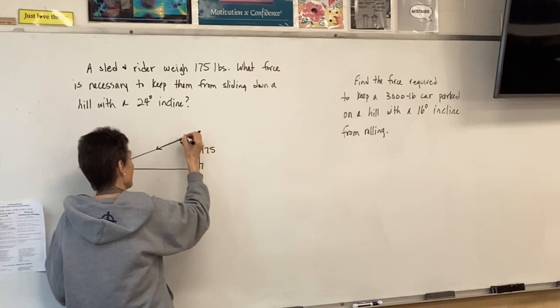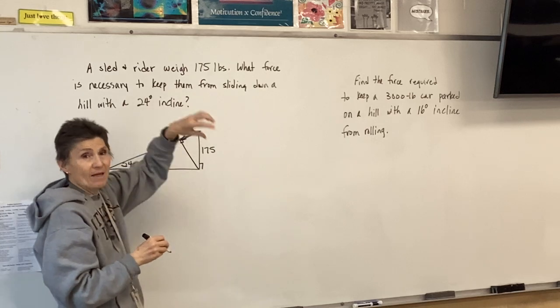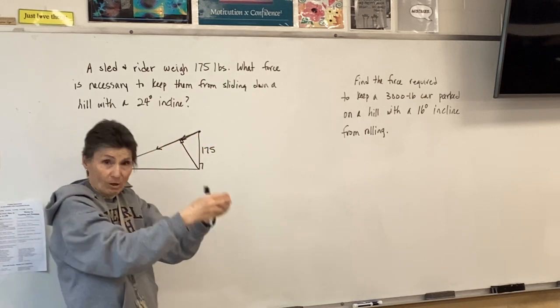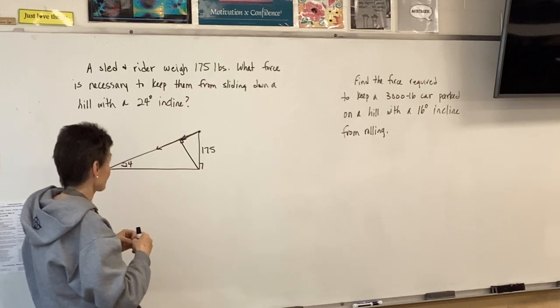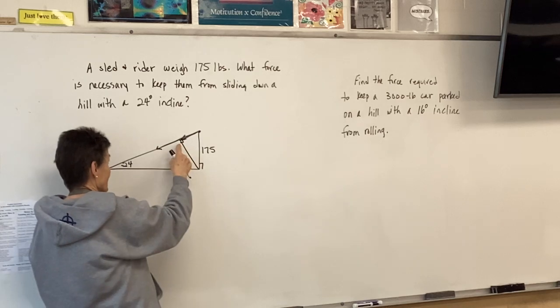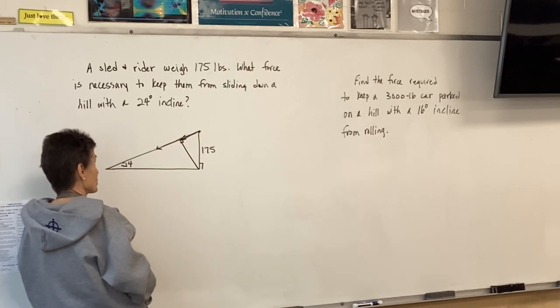So we're going to find this component right here, this little piece right here, because whatever that is, that will be the part that will counteract their pull down the hill. Looking at the triangles that we have built here, that's a perpendicular, we're making what's called the projection of the vector.